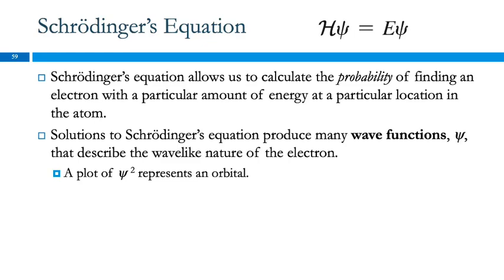The reason I like math is because 1 plus 1 equals 2, and this sort of stuff just doesn't work that way. This is Schrödinger's equation. Schrödinger's equation allows us to calculate the probability of finding an electron that has a particular amount of energy at a particular location in the atom. Schrödinger's equation doesn't have a single solution — it has many solutions, and those are called wave functions. These wave functions describe the wave-like nature of the electron, and if we plot the wave functions squared, that gives us a representation of an orbital.